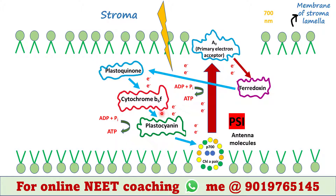Plastoquinone releases those two electrons which are accepted by cytochrome b6f. Cytochrome b6f releases them and plastocyanin accepts them. This electron pair releases extra energy which is used to generate a second ATP from ADP and phosphate. Plastocyanin releases this electron pair, which is again accepted by PS1. The electron is circulated within PS1.